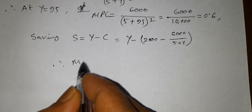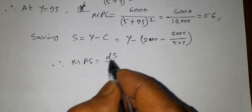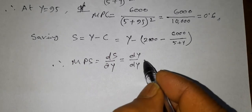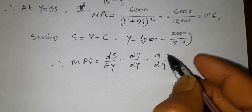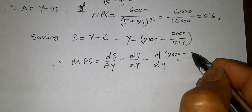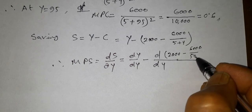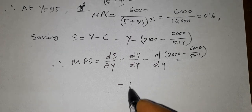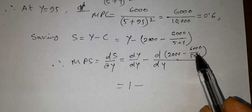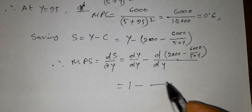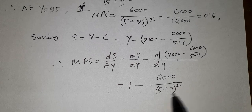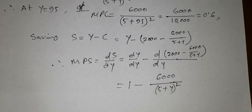Therefore MPS equals ds/dy. Here we differentiate: the derivative of y with respect to y is 1, minus the derivative of the consumption function with respect to y. We have already calculated that the derivative of 6000 divided by (5 plus y) with respect to y equals 6000 divided by (5 plus y) whole square, when we calculated MPC.